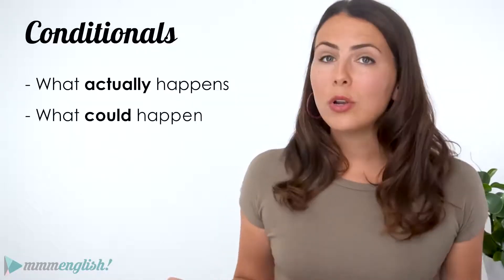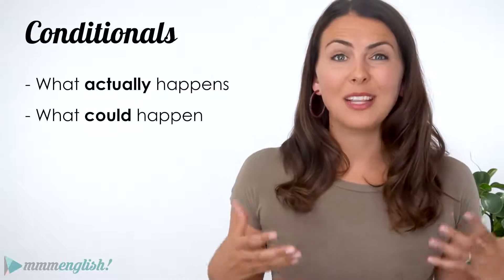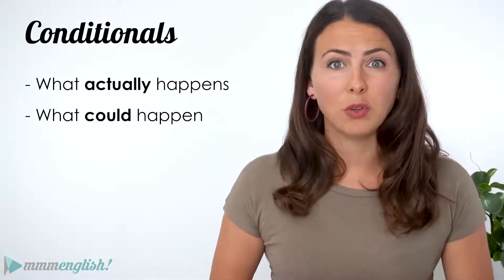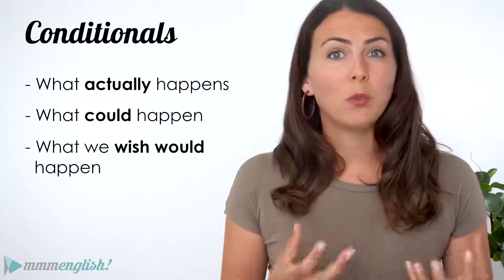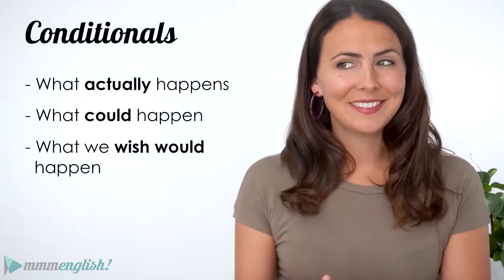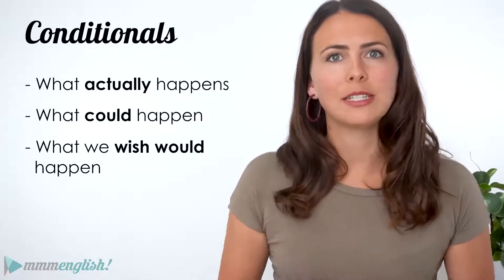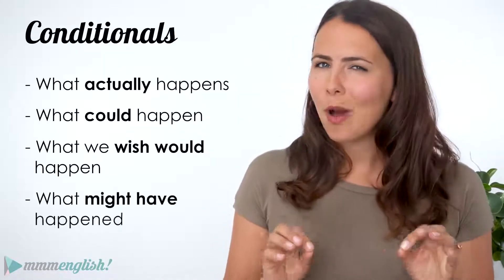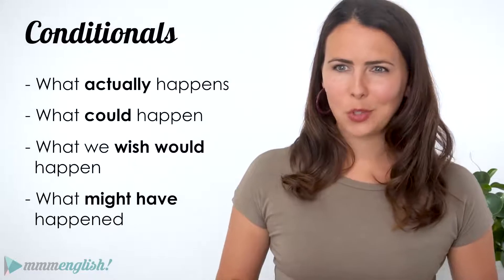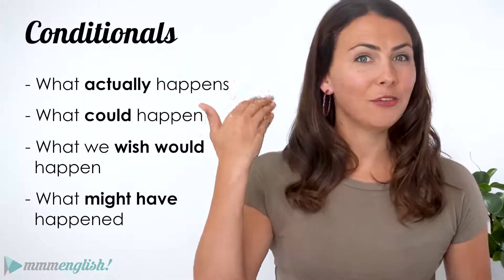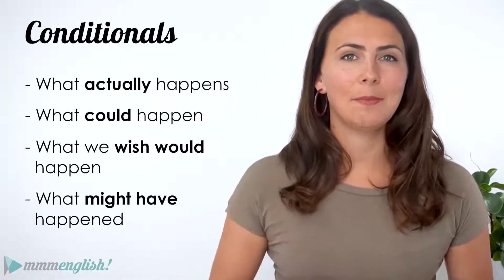We use conditional sentences to explain what actually happens, what could happen — a possible and likely outcome in the future. We talk about what we wish would happen, imagining a different outcome for our present situation, and what might have happened — thinking about a different outcome that happened in the past. Now there are four types of conditional sentences. They're all really similar but they're not the same.